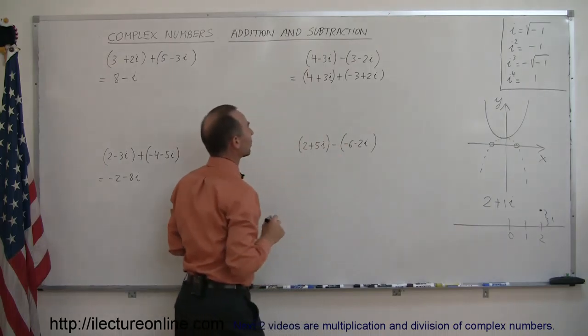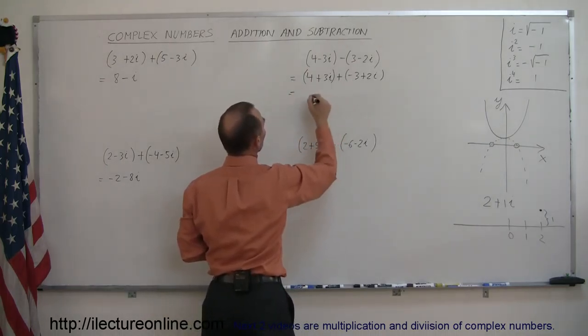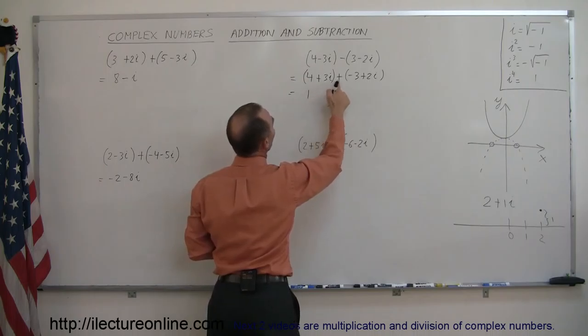I will go ahead and continue with the parentheses there. So this is equal to 4 plus minus 3, which is 1, and 3i plus 2i is 5i.